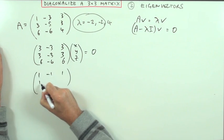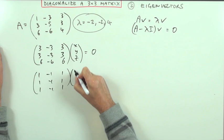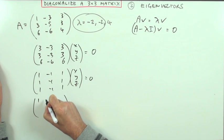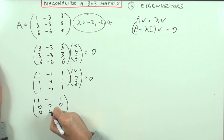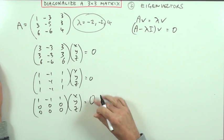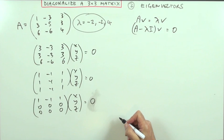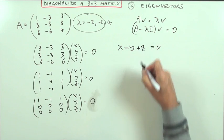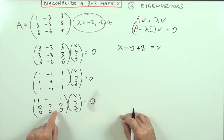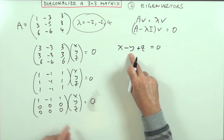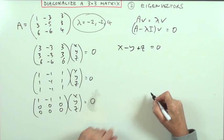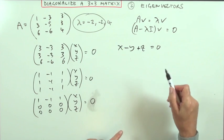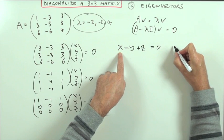With only one independent equation, x minus y plus z equals 0, we have a double redundancy. y and z can float freely. Let y = a and z = b; then x = a minus b. The general vector is (a−b, a, b), which splits into a·(1, 1, 0) plus b·(negative 1, 0, 1). So for the repeated eigenvalue λ = negative 2, I'll choose eigenvectors v₁ = (1, 1, 0) and v₂ = (1, 0, negative 1).